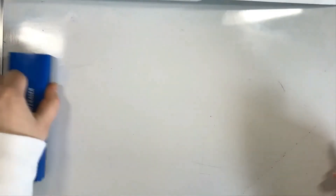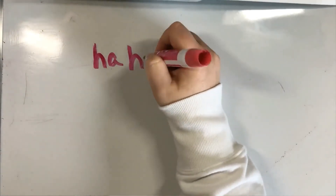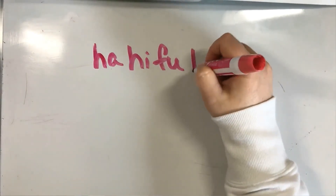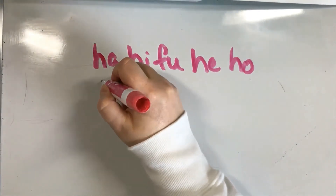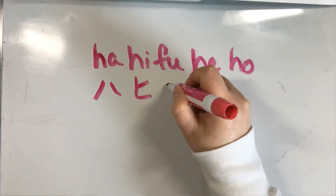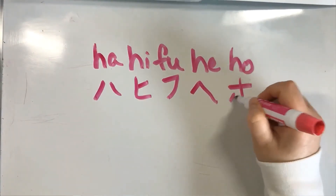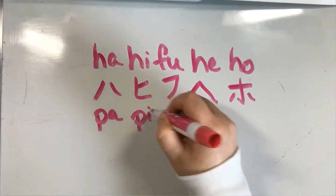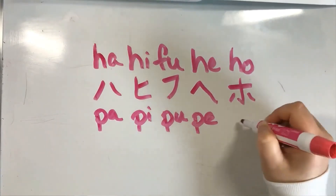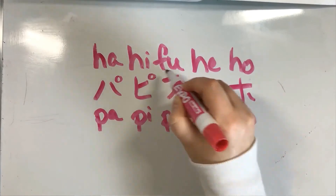The last characters we're going to learn for today are changing those h characters to p characters. So again we have ha, hi, fu, he, ho — we're going to change it to pa, pi, pu, pe, and po by adding a degree sign to the right.